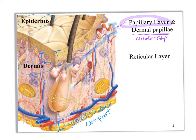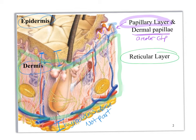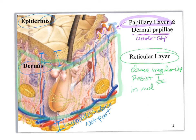Down here, this whole section is your reticular layer. This is going to be the dense irregular connective tissue proper, and this is the part that's going to resist tension in multiple directions.